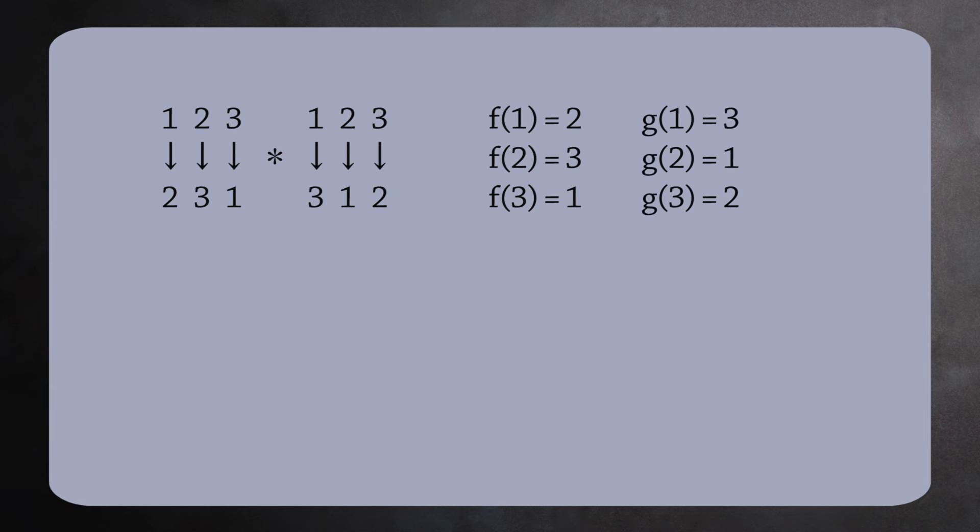Next, we compose f and g. This gives us the bijection sending 1 to 1, 2 to 2, and 3 to 3. This is the trivial permutation and it is the identity element in the group S3.